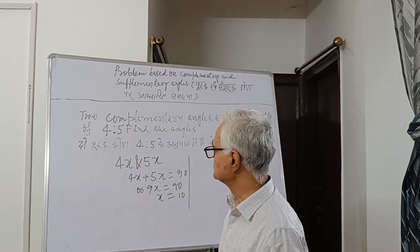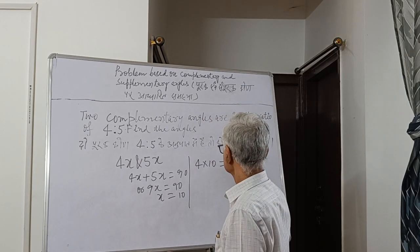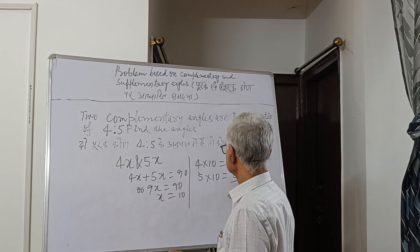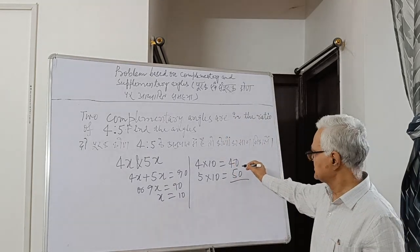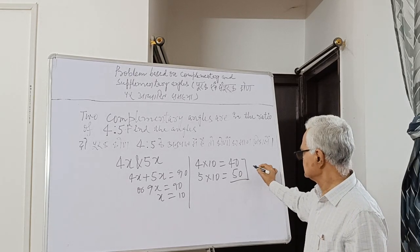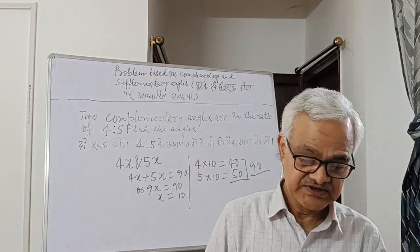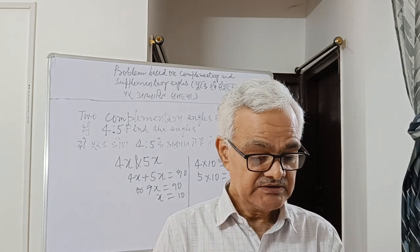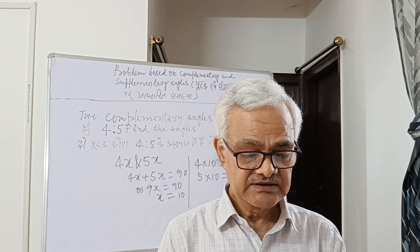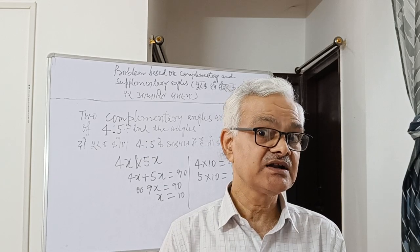Since x is equal to 10, now 4x is equal to 40 and 5x is equal to 50. Adding 40 and 50 gives us 90. So 40 and 50 are the two complementary angles, and these two complementary angles are in the ratio of 4 to 5.